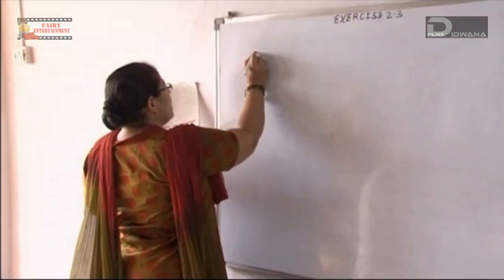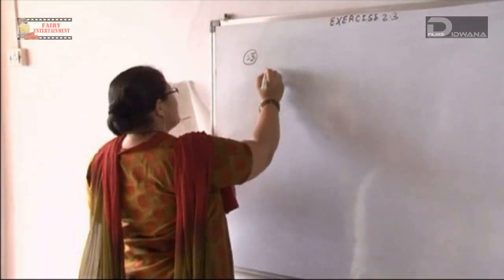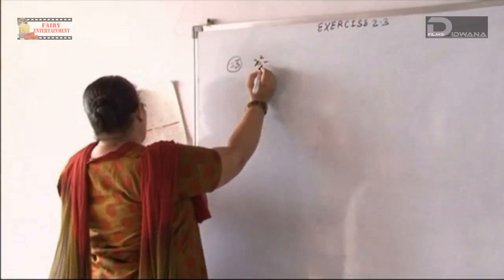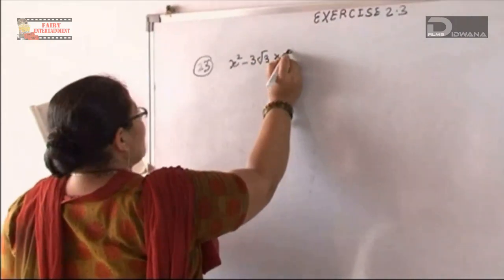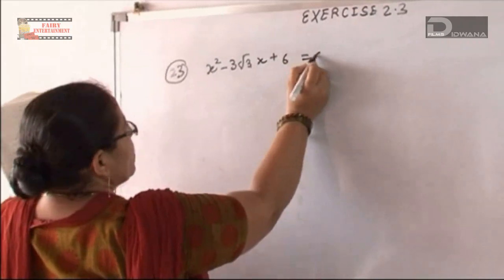We start with question number 23. The equation is x² - 3√3x + 6 = 0.